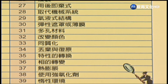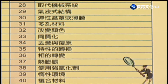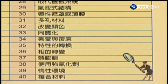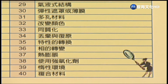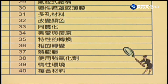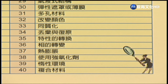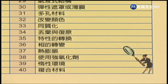续：32.改变颜色、33.同质化、34.丢弃与复原、35.特性的转换、36.相的转变、37.热膨胀、38.使用强氧化剂、39.惰性环境、40.复合材料。